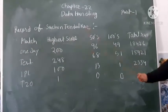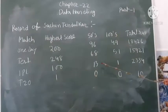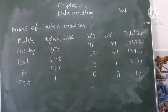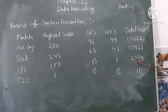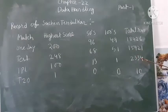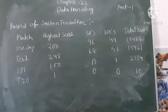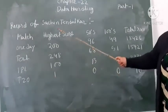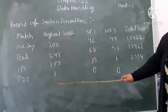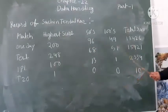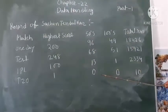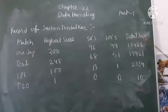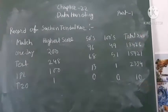IPL: highest score 100, fifties 50, matches 30, centuries 101, and total runs 2,334. And T20: highest score 1, fifties 50, centuries 0, and total runs 10.